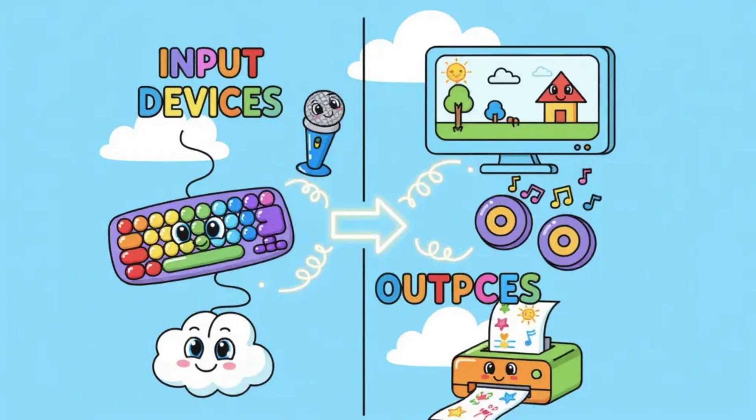Let us begin with input devices. An input device is any tool or equipment that allows us, the users, to give instructions to the computer. Imagine you want to tell the computer what to do. You cannot just speak to it directly with no tools. The computer needs a way to receive your commands. That is exactly the role of input devices.